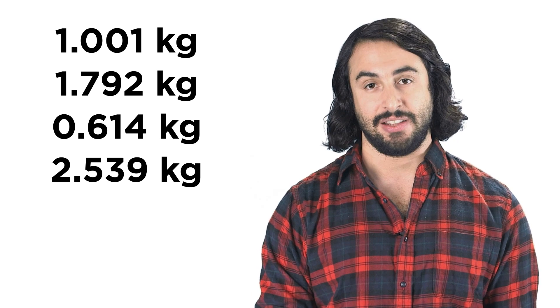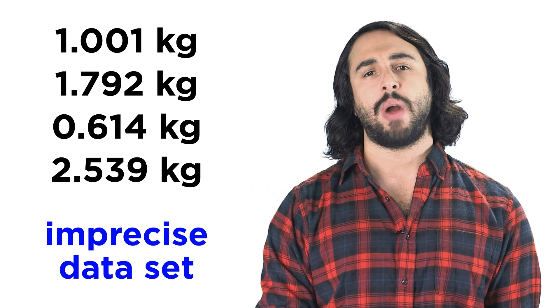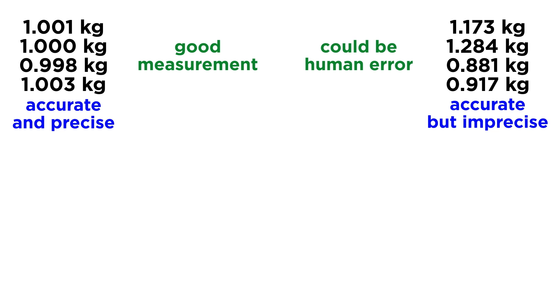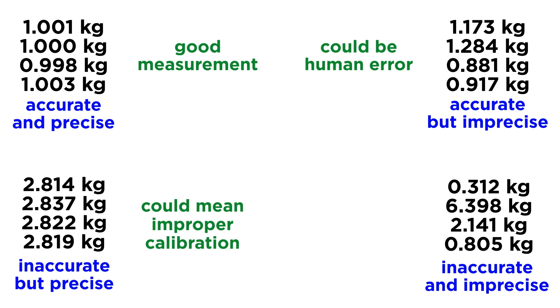If there was much variance in the data, we would say it was imprecise. In this way, we can see that a data set can be both accurate and precise, which means good measurement, accurate and imprecise, which may simply be human error, inaccurate but precise, perhaps due to faulty calibration of an instrument, or both inaccurate and imprecise, where everything goes wrong.